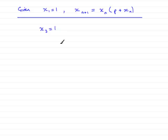Now in part b we found out that x₃ was equal to 1 plus 3p plus 2p squared. So we can use this fact to say that 1 plus 3p plus 2p squared must equal 1.